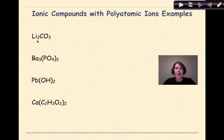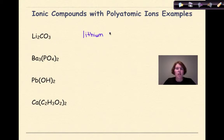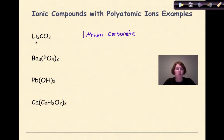Li₂CO₃: Li is a group 1 metal — that is lithium. CO₃ is carbonate, so this is simply lithium carbonate. Lithium doesn't need a Roman numeral because it's in group 1 and can only be +1. However, be aware that if you start with a transition metal in a formula with a polyatomic ion, you'd have to write the metal name, the Roman numeral, and then the polyatomic ion name.